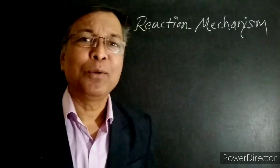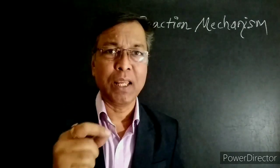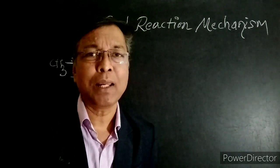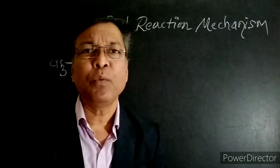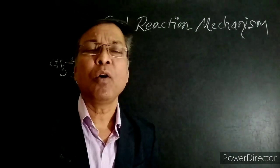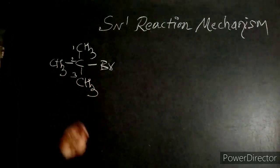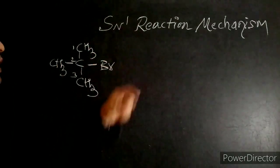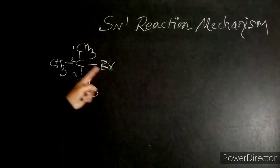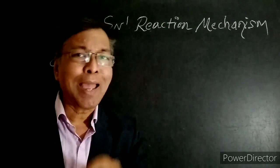In this video I'm going to explain how to get full marks in SN1 and SN2 reaction mechanism in board theory exams. In board theory examination, they may ask questions regarding SN1 reaction mechanism in three different ways: first, 'discuss SN1 reaction mechanism by taking a suitable example'; second, 'discuss alkaline hydrolysis of tertiary butyl bromide'; third, 'discuss alkaline hydrolysis of 2-bromo-2-methylpropane.' For all three types of questions, we write the same answer.